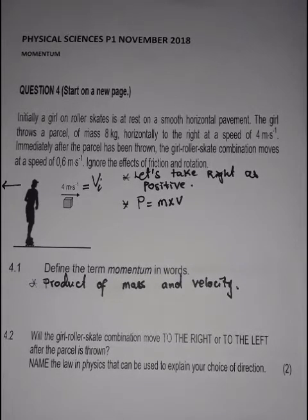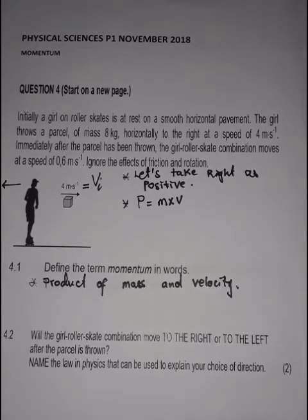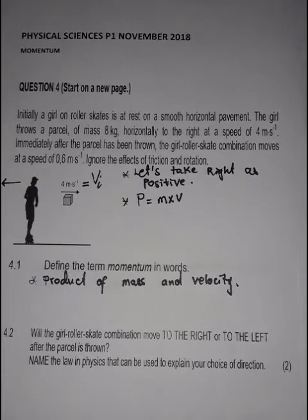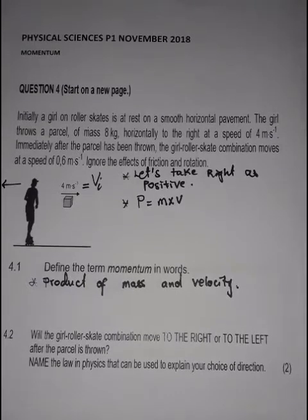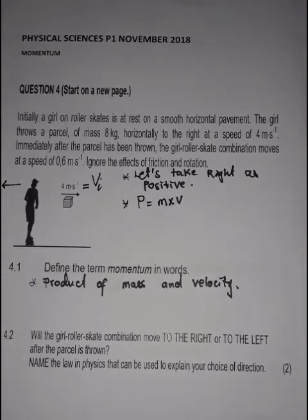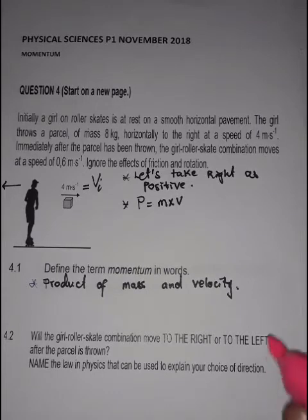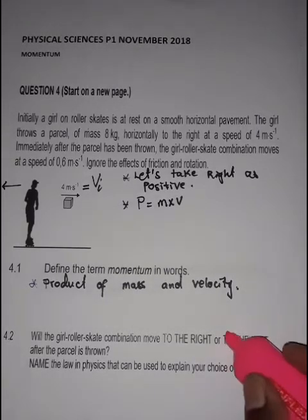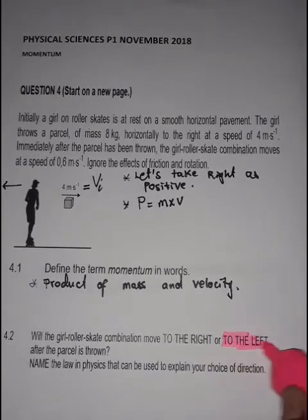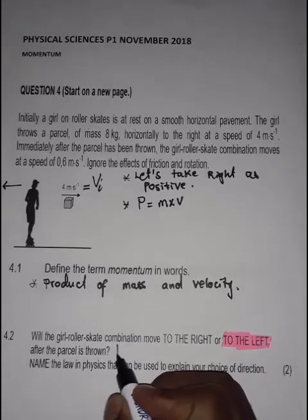Question 4.2: will the girl-roller skate combination move to the right or to the left after the parcel is thrown? As I already explained using Newton's Third Law, the girl will move to the left.